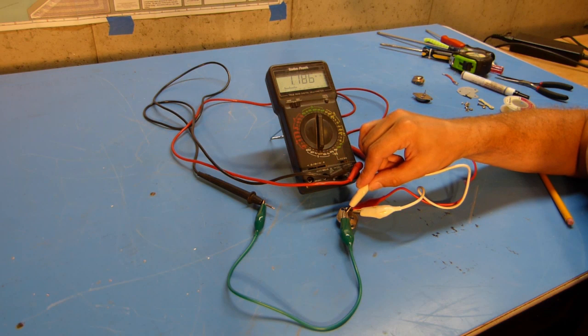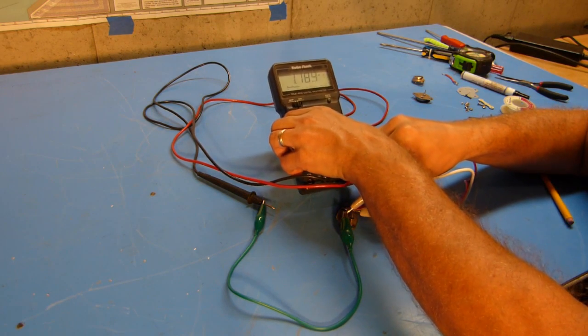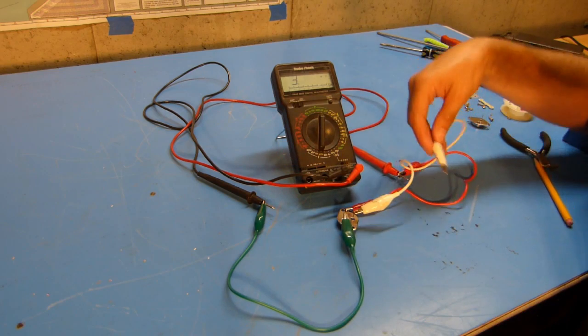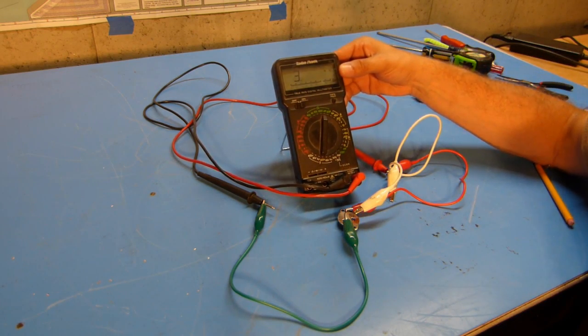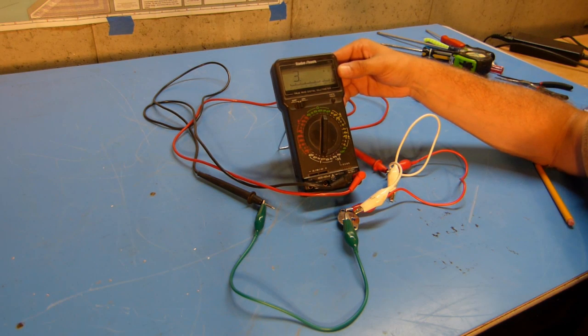Okay and you can see there when I do touch the lead to the case we now have 1.185 megaohms resistance so it is conducting the transistor is doing what it's supposed to do and if I remove the lead there you can see the transistor turns back off and now has more resistance than the meter can measure in this range.